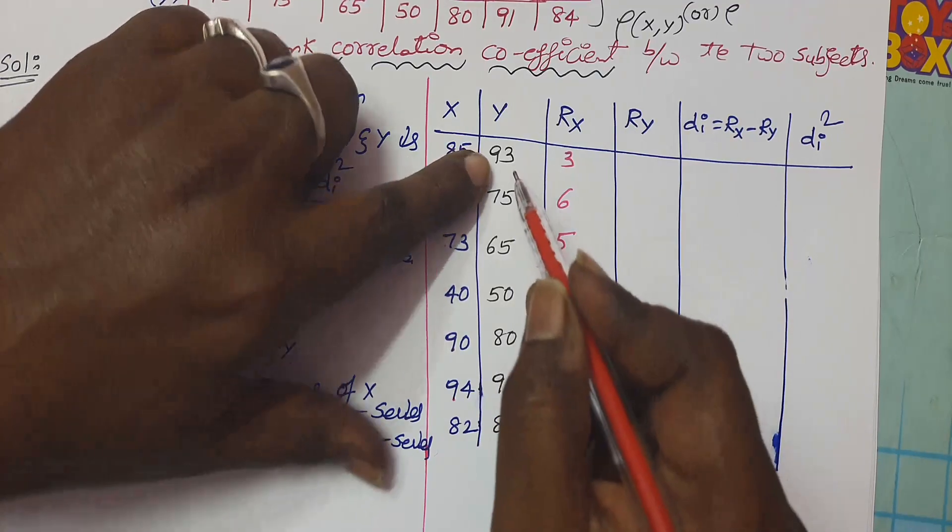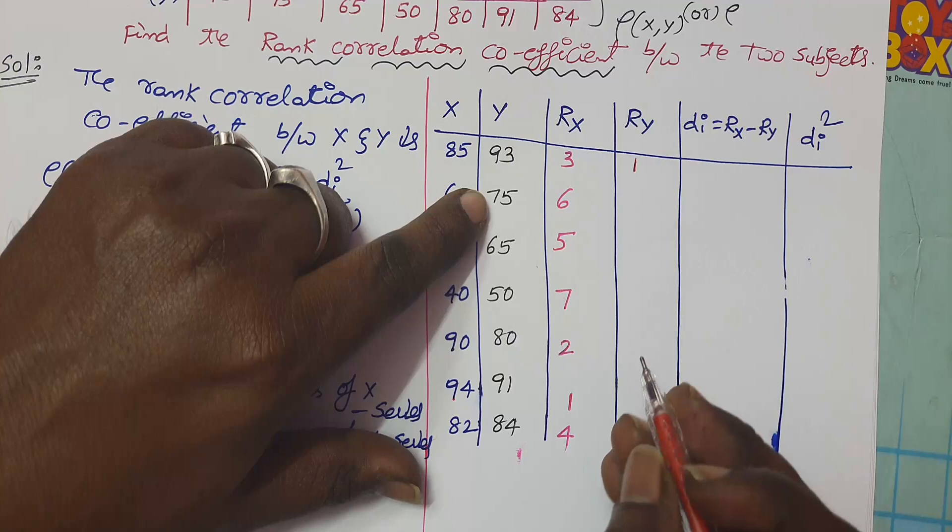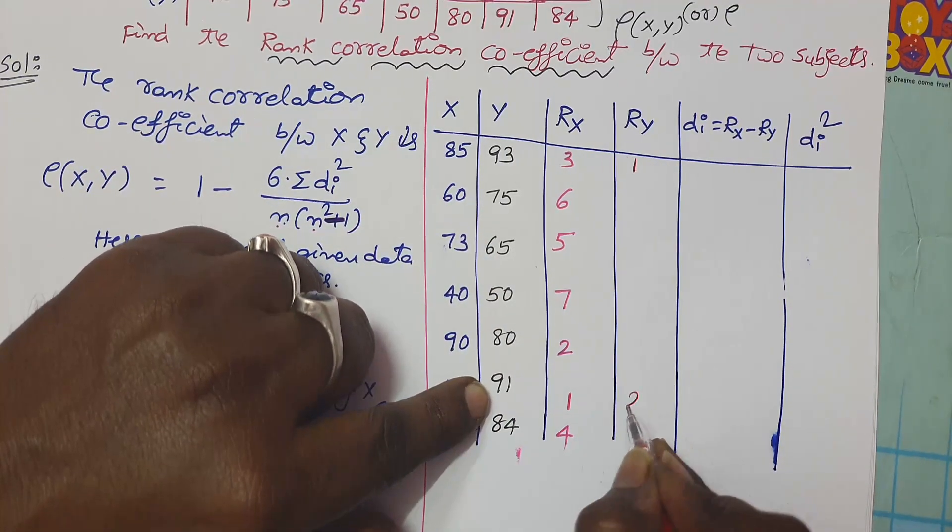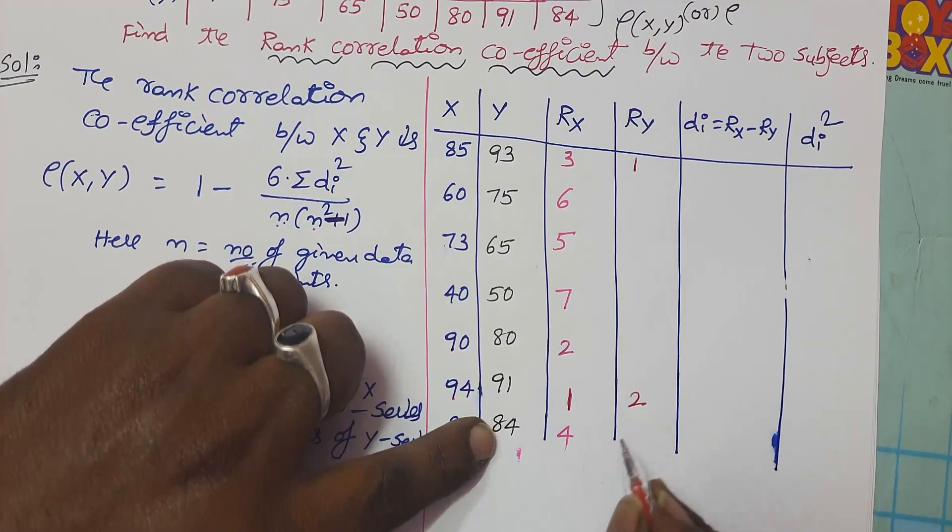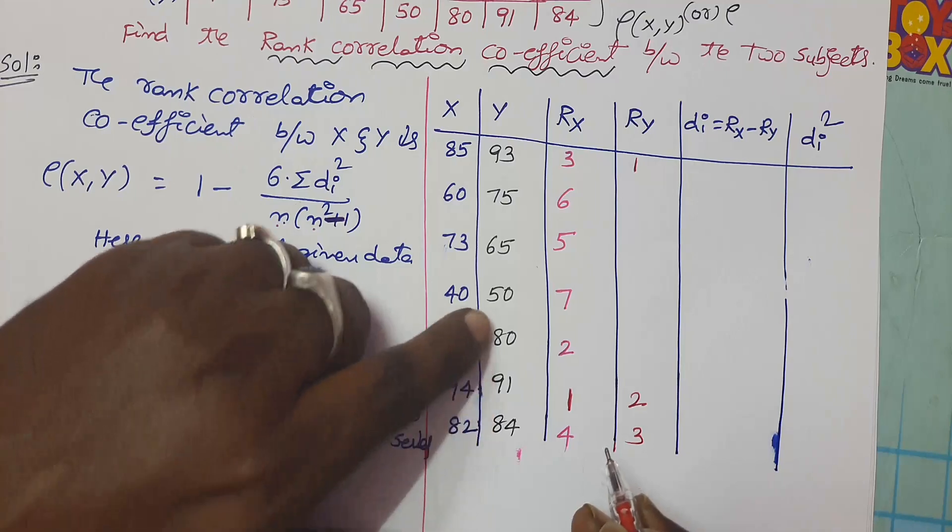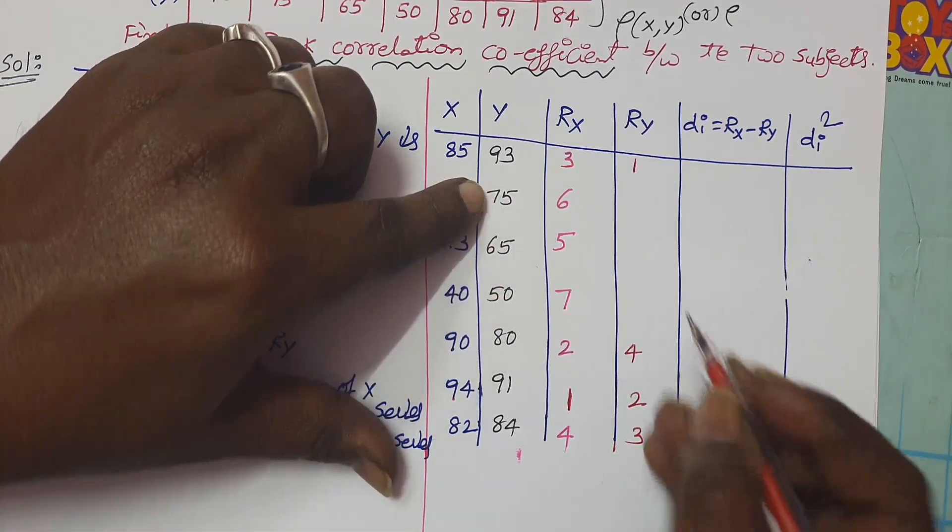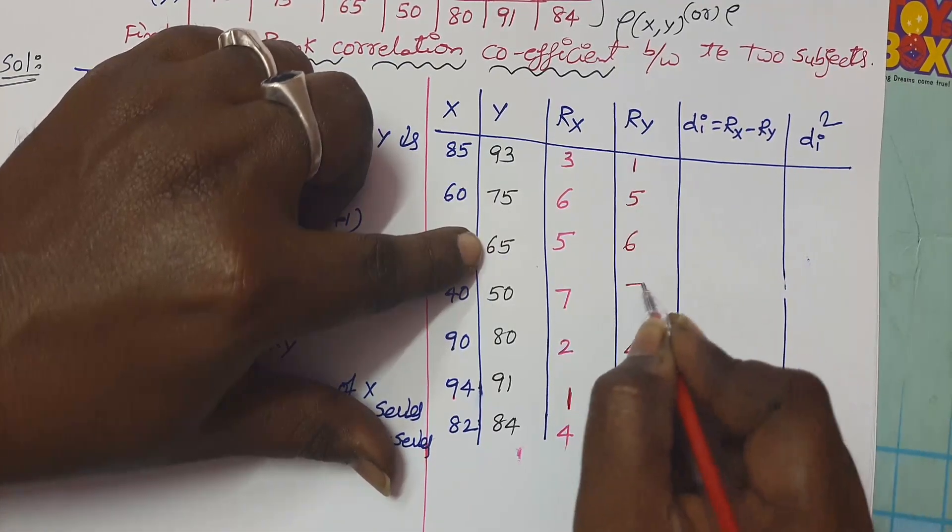Next, next highest mark is 91. Look at carefully. Next highest mark is after 91, 84, so it would be 3. Next, it is 80, fourth rank. Next, 75, it is fifth rank. It is sixth rank. It is seventh rank.